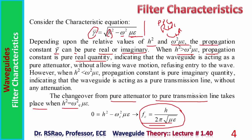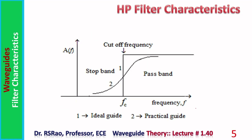The key point is that h assumes different values for different configurations: h is one value for the parallel plate guide, a different value for rectangular waveguide, and something else for circular waveguide. But the common formula fc = h / (2π√με) applies to all three. Now let us represent all this discussion in graphical form.